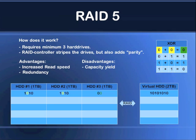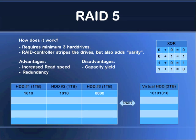Going to the second bit: hard drive number one has zero and hard drive number two has zero, so according to the table the second parity bit is zero. The third bit: hard drive number one is one, hard drive number two is one — one plus one gives a parity bit of zero, and that gets written to hard drive number three. The fourth bit is zero and zero, which also gives zero. The RAID controller has now calculated the parity bits and written them all to hard drive number three.